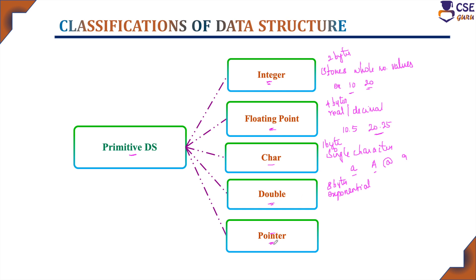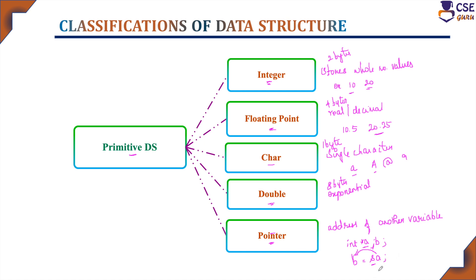Pointer data type is used to store the address of another variable. For example, if you declare 'int *A', that is a pointer variable — whenever a variable is preceded by a star (asterisk) symbol, it is a pointer variable. For example, 'int A, B; B = &A;' — the ampersand represents the address operator, so the address of A is stored in B. Accessing B gives only the memory location. To access the variable value, you use star A. This is the pointer variable.